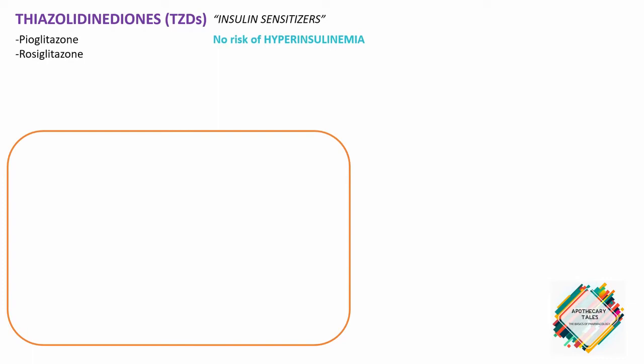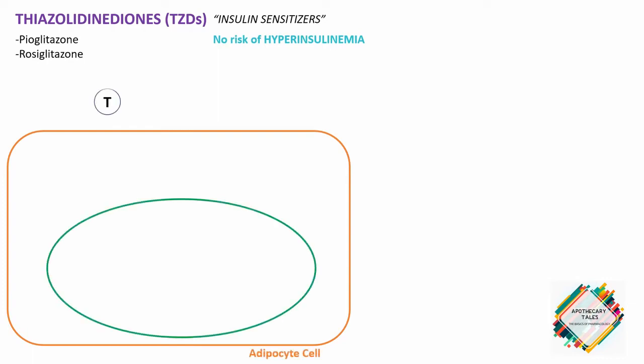What is the mechanism of action? Thiazolidinediones lower insulin resistance by acting as agonists for the peroxisome proliferator-activated receptor gamma (PPAR-gamma), which is a nuclear hormone receptor. When this receptor gets activated, it causes regulation of the transcription of several insulin-responsive genes, resulting in increased insulin sensitivity in adipose tissue, liver, and skeletal muscles.